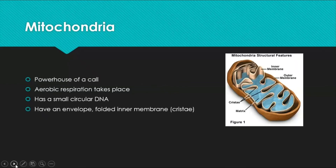Mitochondria are the powerhouse of the cell — this is where aerobic respiration takes place. Looking at their structure, they have a folded inner membrane surrounded by an outer membrane. The bends in the inner membrane are called cristae, and the inner area is called the matrix. Mitochondria also contain a small circular DNA.